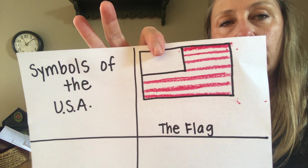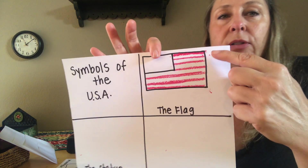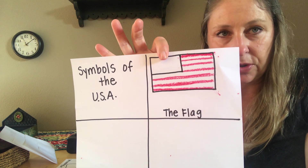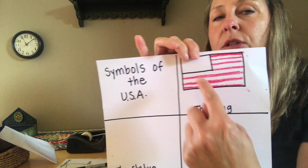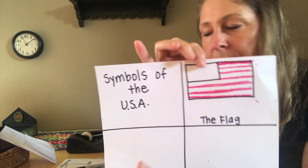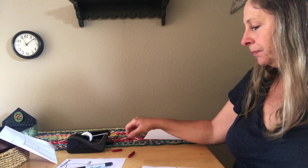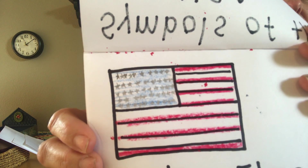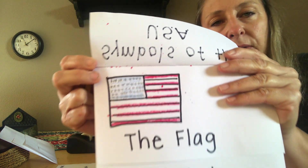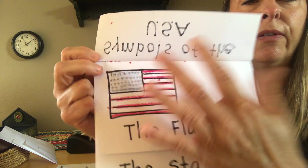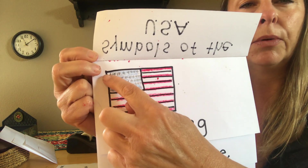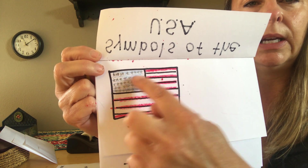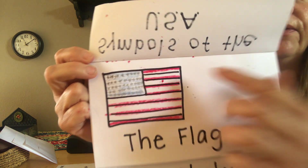Up here in the corner, this is where the stars go. The stripes represent the first 13 colonies or our first 13 states, but the stars stand for the current states — all 50 of them. The easiest way to make sure you have 50 stars is to do five rows of 10: 10, 20, 30, 40, 50.